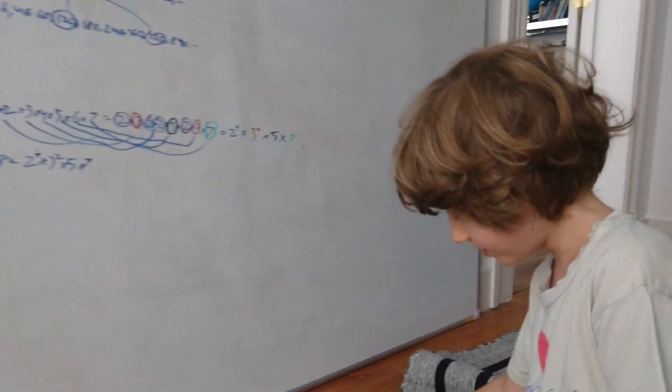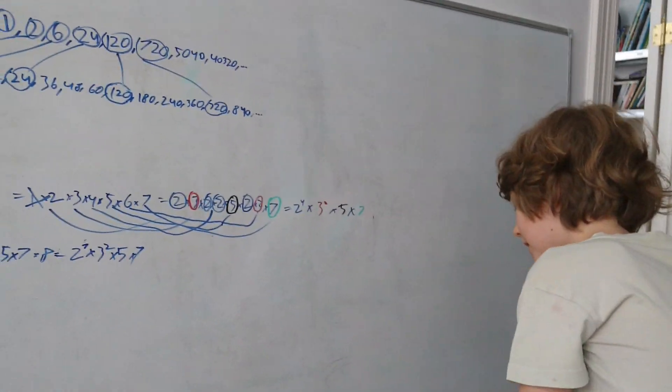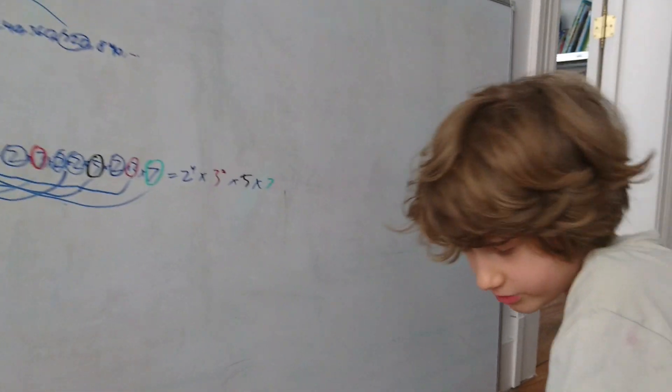This is not that hard, but it's also not that simple. I'm gonna show that all factorial numbers are highly composite numbers.